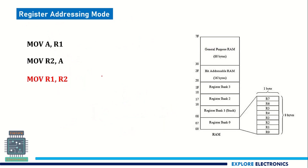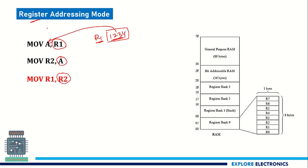The next addressing mode is register addressing mode. In register addressing mode, the operand is a register. For example, MOV A, R1 — R1 is a register consisting of some value like 1, 2, 3, 4. We specify R1, R1 holds some data, and that data moves to A. The difference between direct addressing mode and register addressing mode is: MOV A, 35H uses a direct address, but if you replace 35H with R1, that is a register. We look at the source — if the source is a memory location, it is direct addressing mode; if the source is a register, it is register addressing mode.